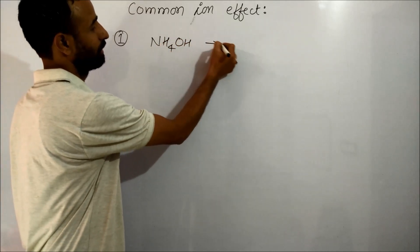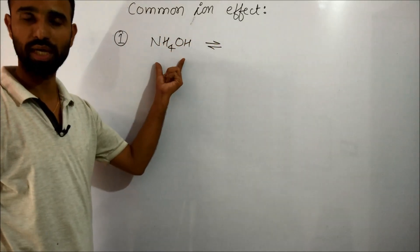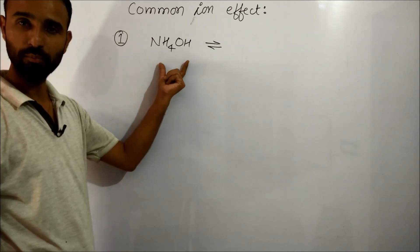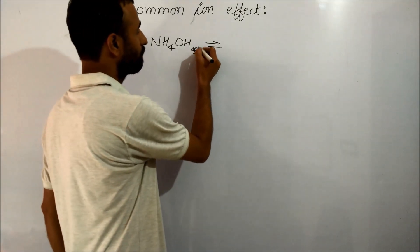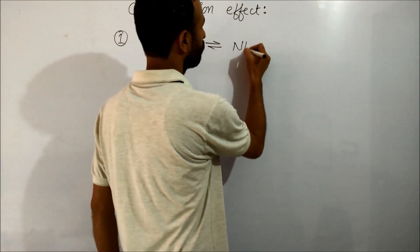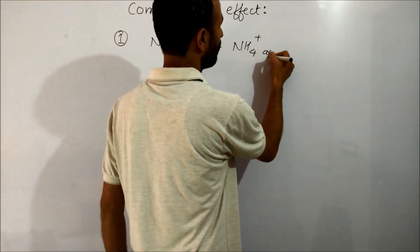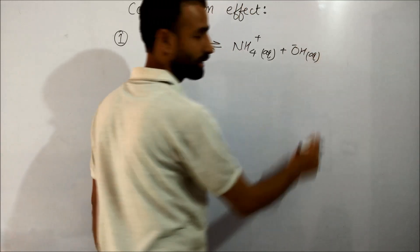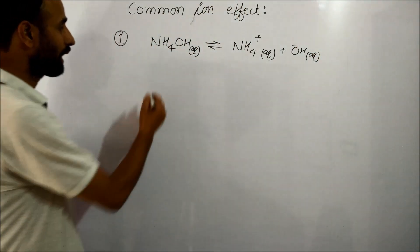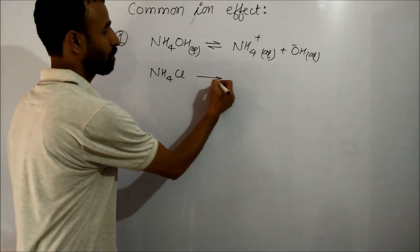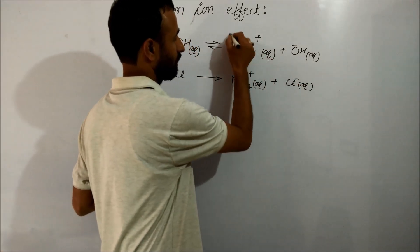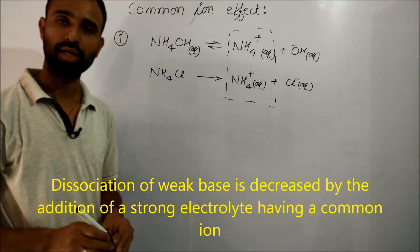For example, let us take ammonium hydroxide. You know ammonium hydroxide is a weak electrolyte, that is a weak base. It gives NH4+ ions and OH- ions.